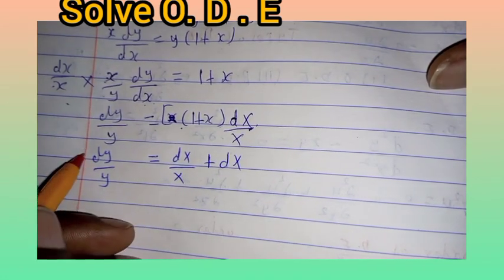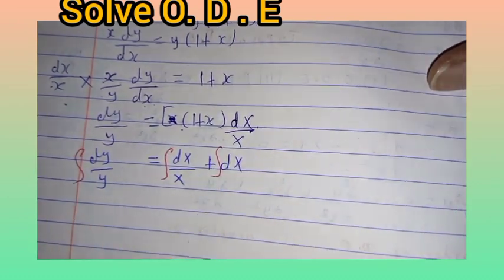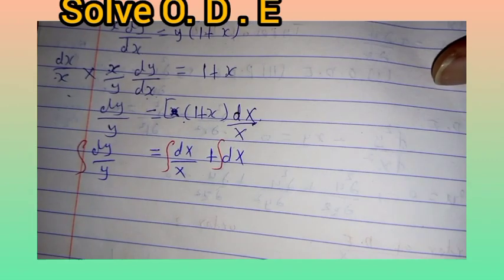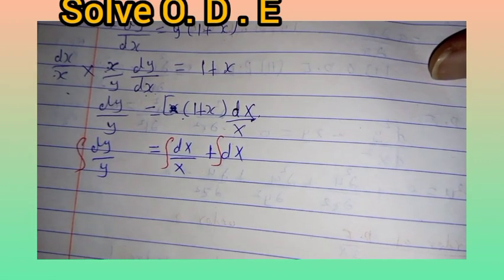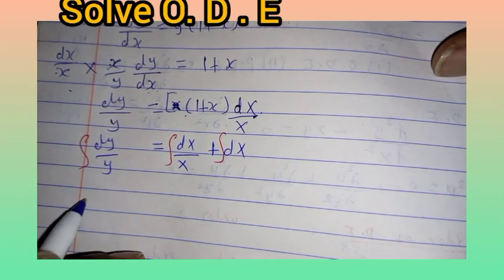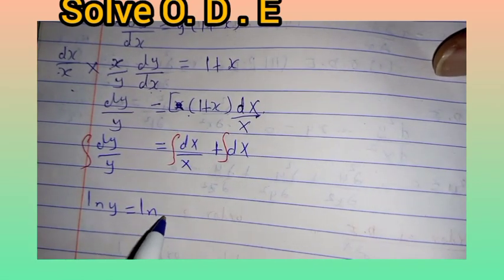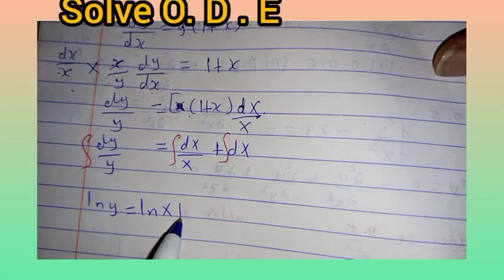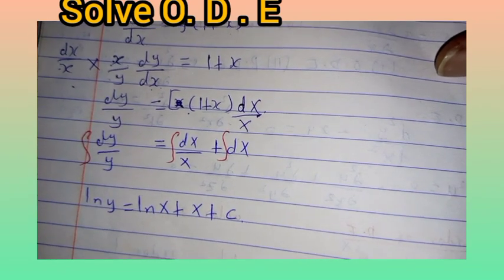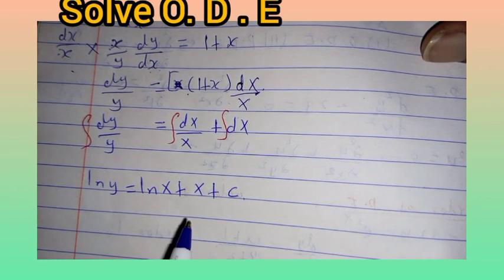We take the integral of both sides. Integrating dy over y gives the natural logarithm of y, and integrating the right side gives natural logarithm of x plus x plus constant c.